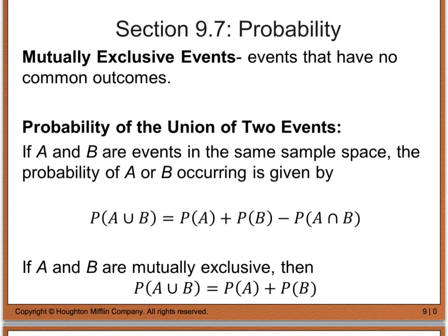The last topic deals with mutually exclusive events — these are events that have no common outcomes. The probability of the union of two events: if A and B are two events in the same sample space, the probability of either A or B occurring is given by P(A) plus P(B) minus the probability of A and B both occurring. If A and B are mutually exclusive, then the probability of the union of A and B equals simply P(A) plus P(B).